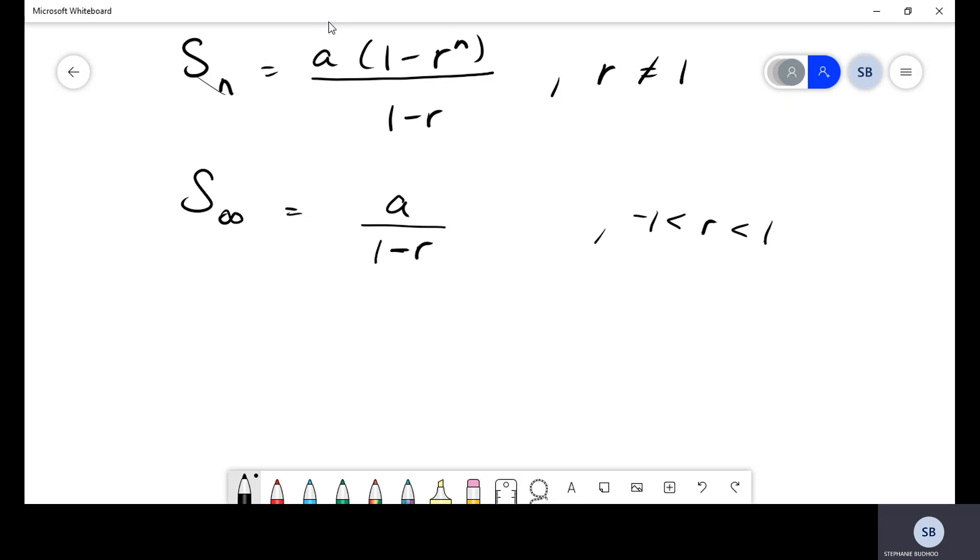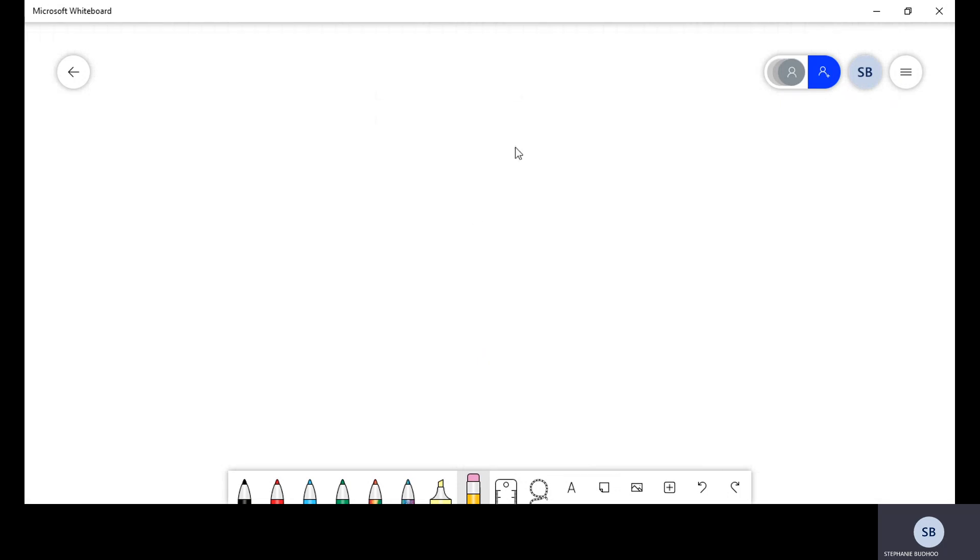Also, if they give you the sum to infinity, for example, to be 10, and they give you the value of A to be 8, you have 1 unknown R. You can just substitute, create an equation, and solve. So, what I want to really show you guys right now is a real-life example of how GPs are applicable and how you can actually use your formulas to work out stuff that's happening to you right now.